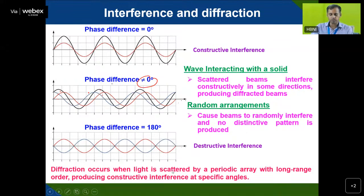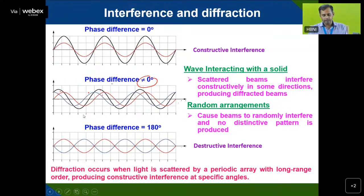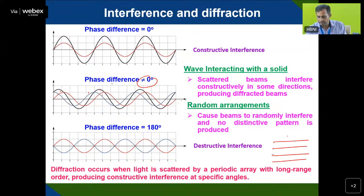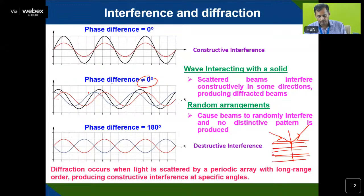Diffraction occurs when light is scattered by a periodic array with long range order. When there is a periodic array, like lattice planes that are periodically arranged, you will see a diffraction occur. Only if there is long range order will you get a diffraction pattern.